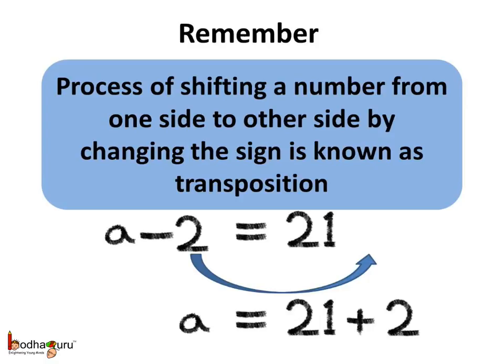Or in other words, we can say, when we shift a number from one side of the equation to the other side, we change its sign. Thus, to solve a problem A minus 2 equal to 21, we move minus 2 from left hand side to the right hand side.